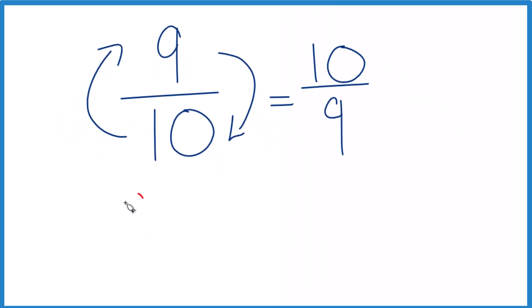We can check that. We could take 9 tenths and multiply that times 10 ninths, and we should get 1 if this was done correctly. 9 times 10, that's 90.